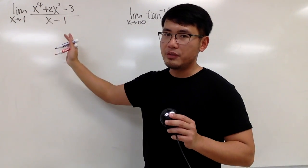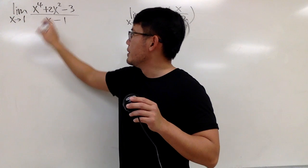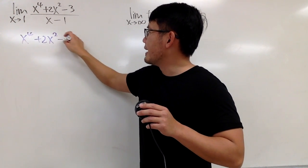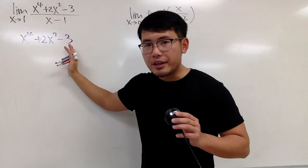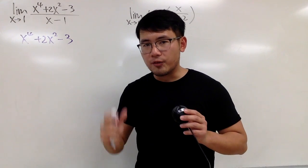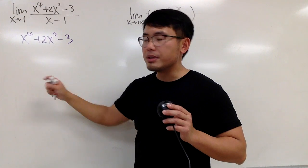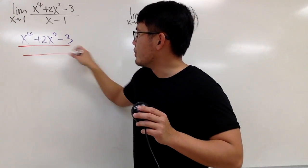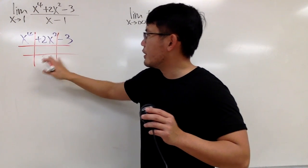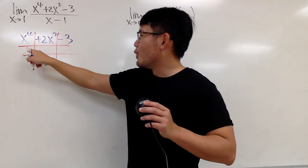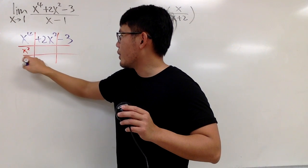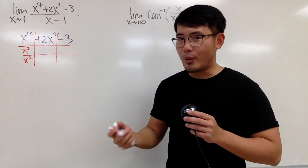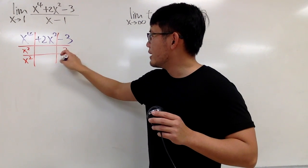You don't have to do long division or synthetic division. Factoring is good enough, because if you look at x to fourth power plus 2x squared minus 3, this right here is actually in the quadratic form. This is not a quadratic expression, because the degree right here is 4.